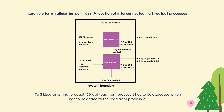To the 3 kg final product, 50% of the load from process 1 must be allocated and added to the load from process 2. Only those loads of process 1 that are related to the 3.5 kg—which is 50% of the intermediate product input into unit process 2—can be allocated to the final product.